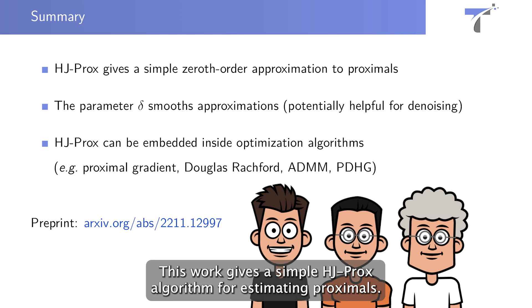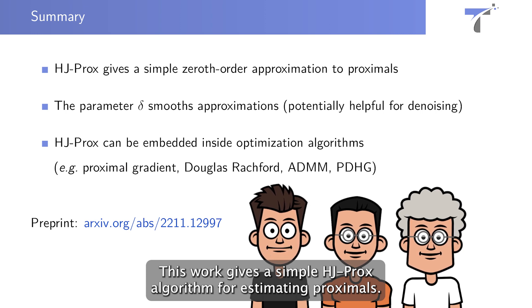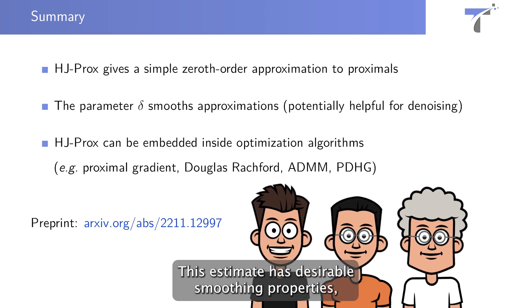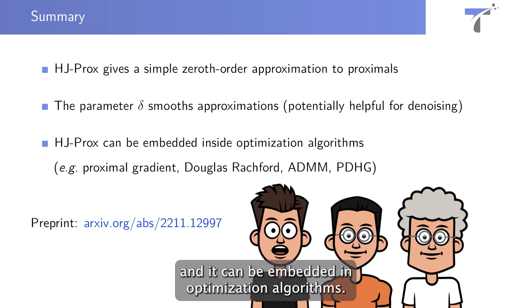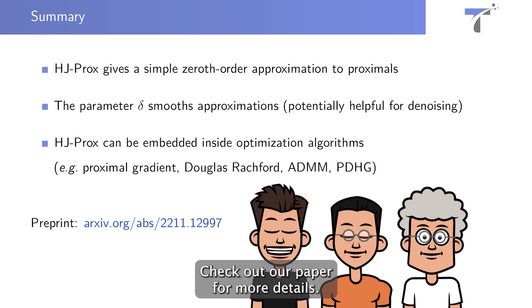This work gives a simple HJ-Prox algorithm for estimating proximals. This estimate has desirable smoothing properties, and it can be embedded in optimization algorithms. Check out our paper for more details.